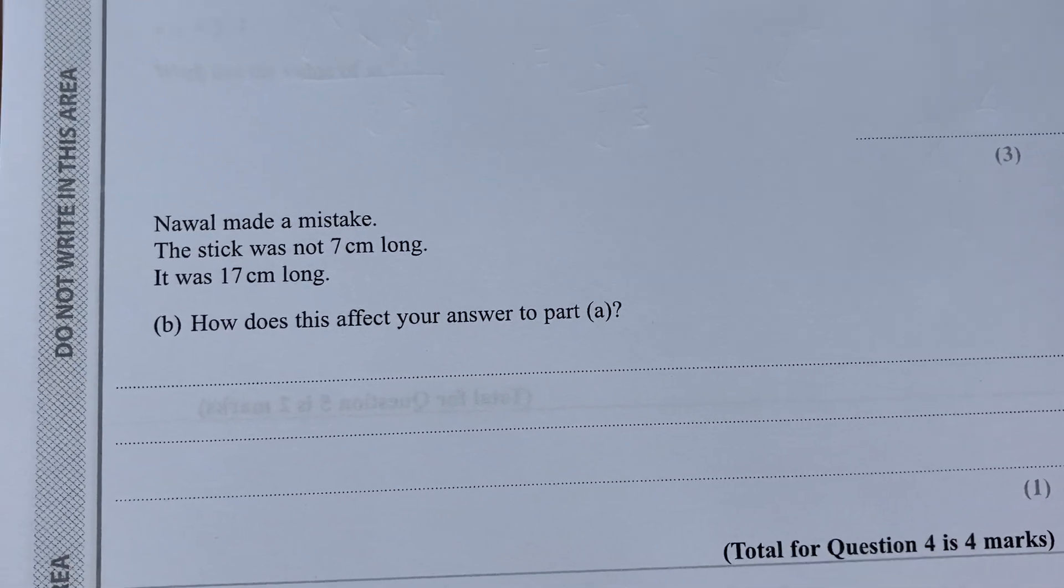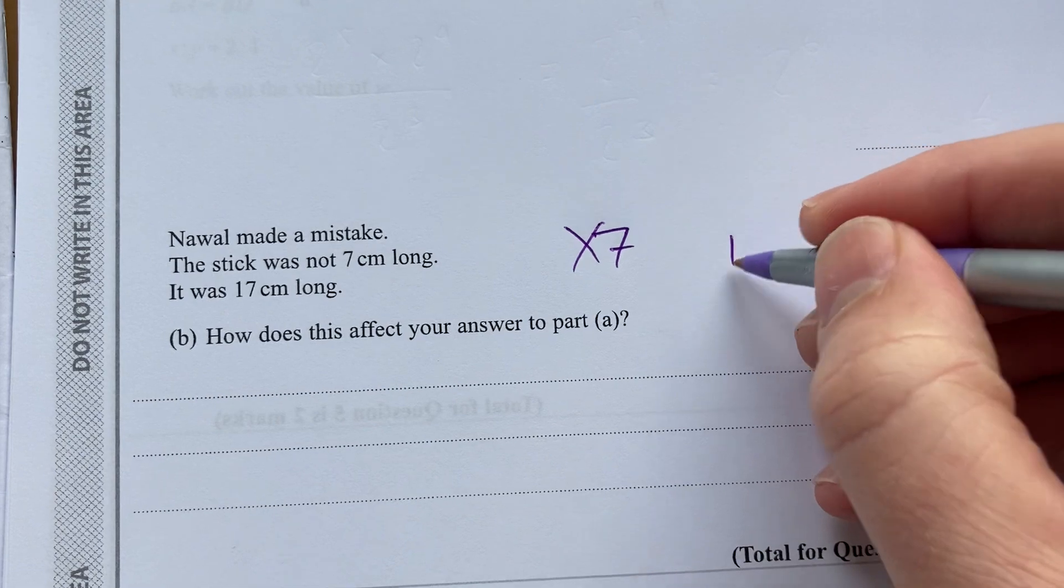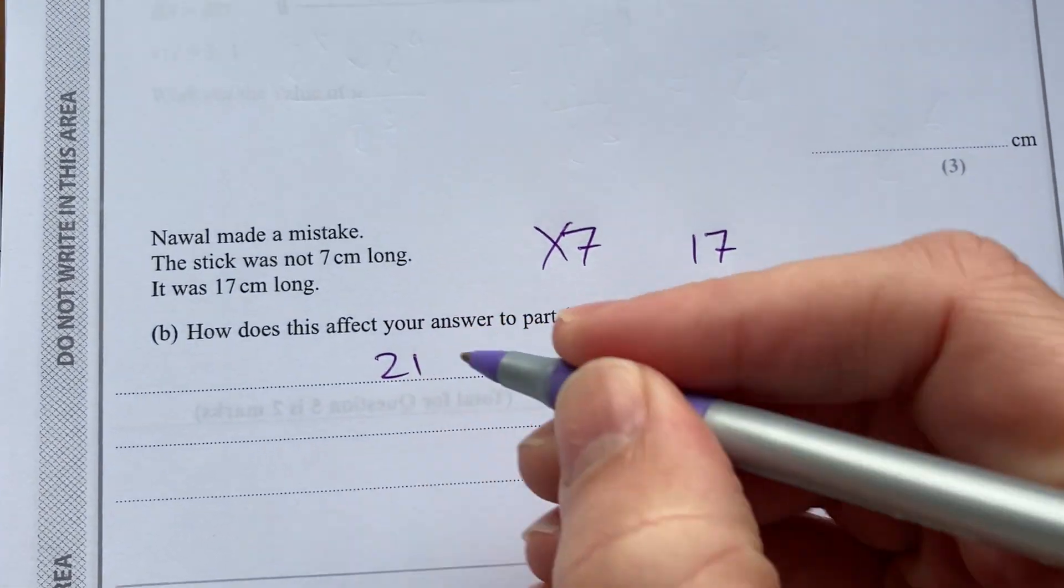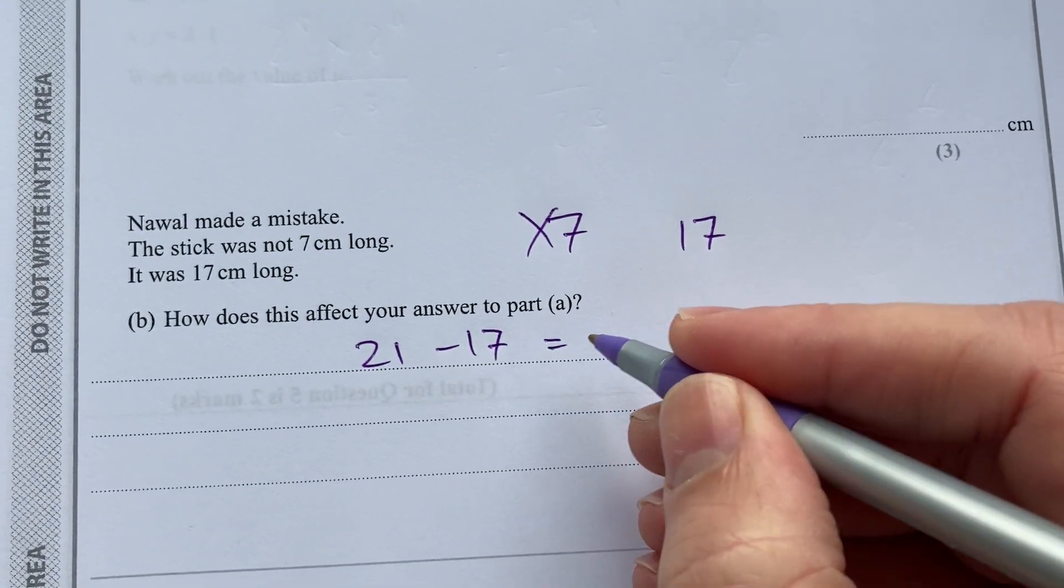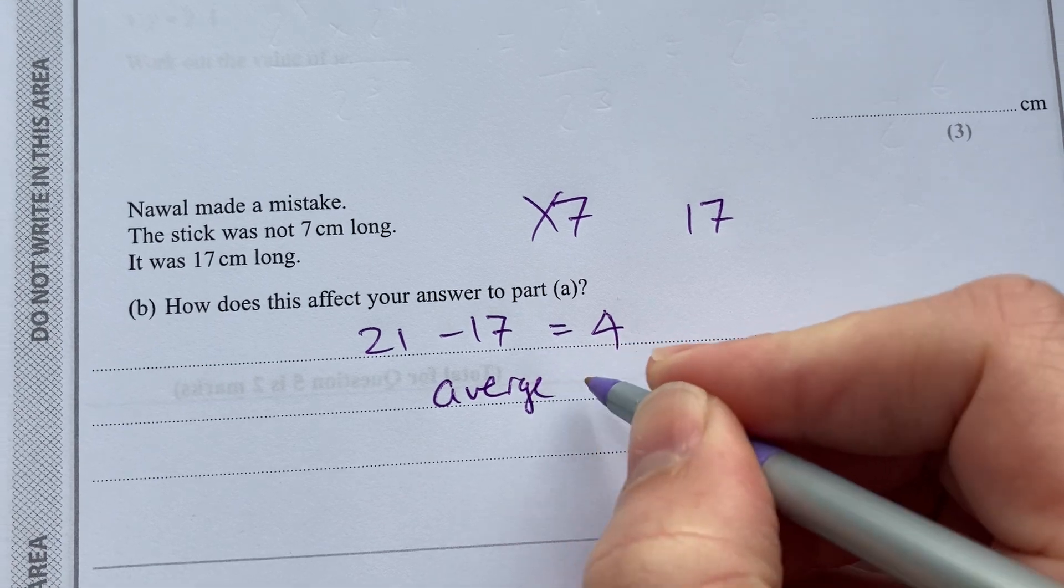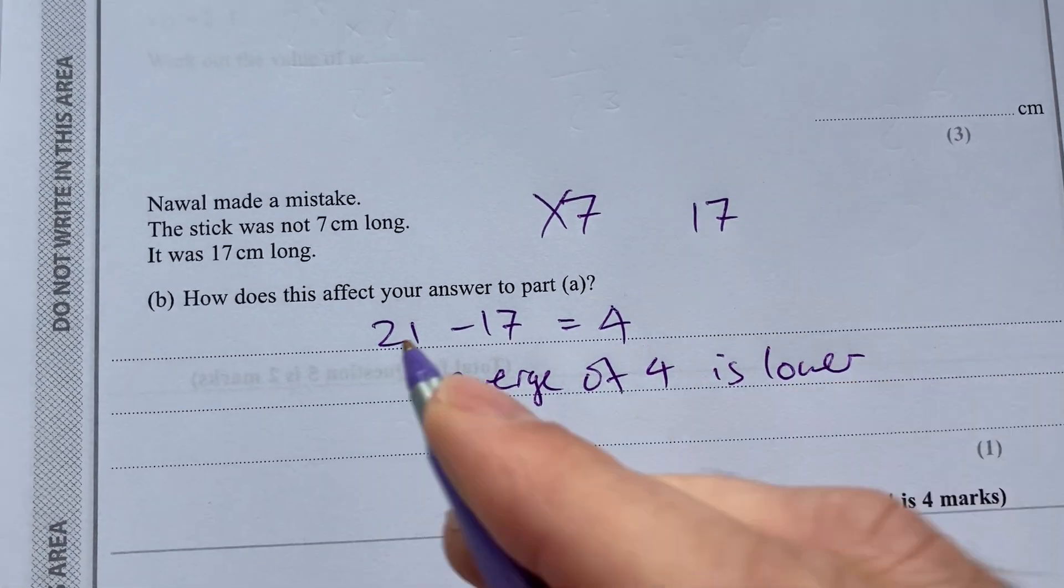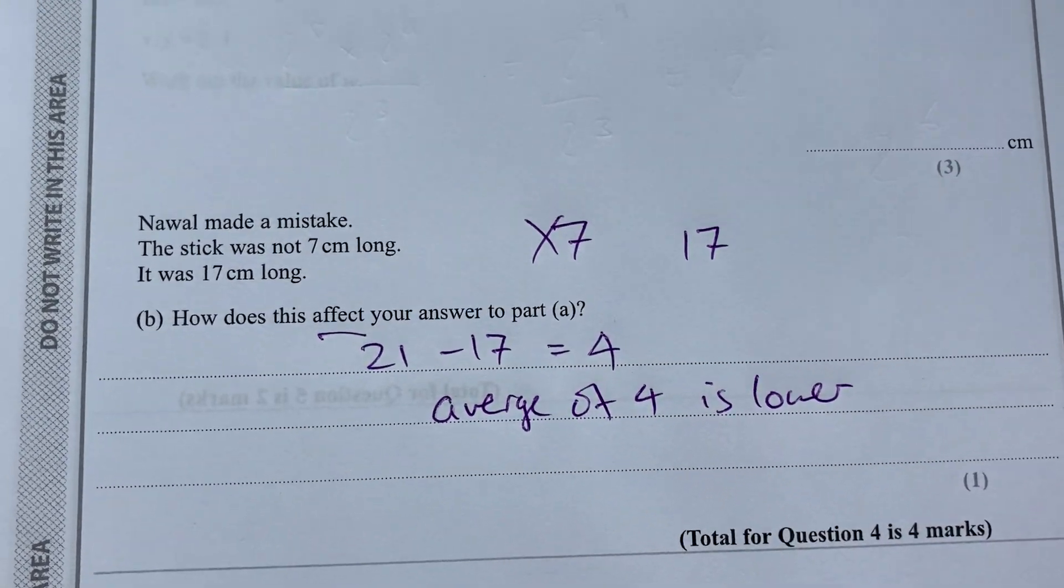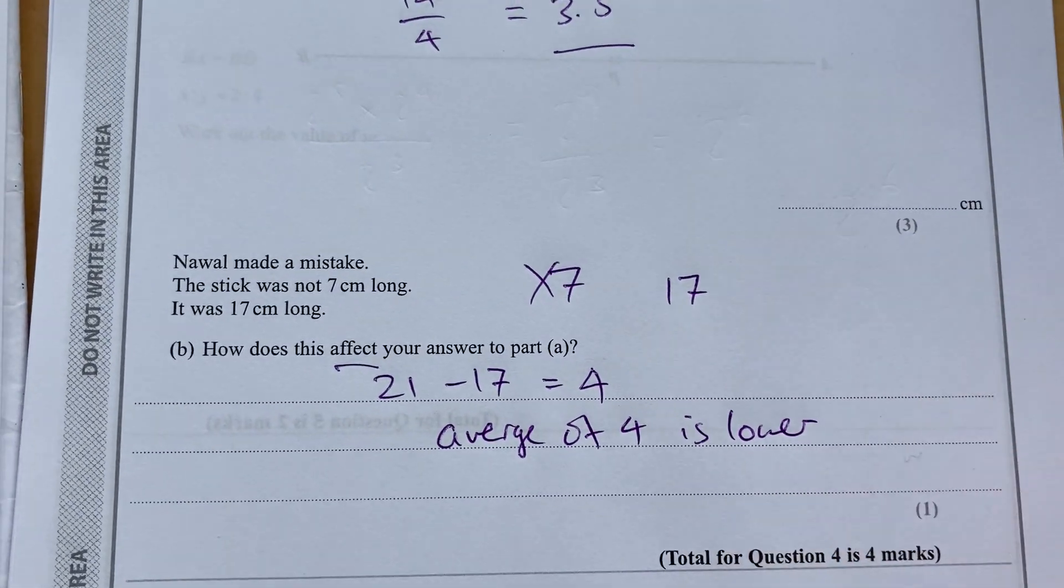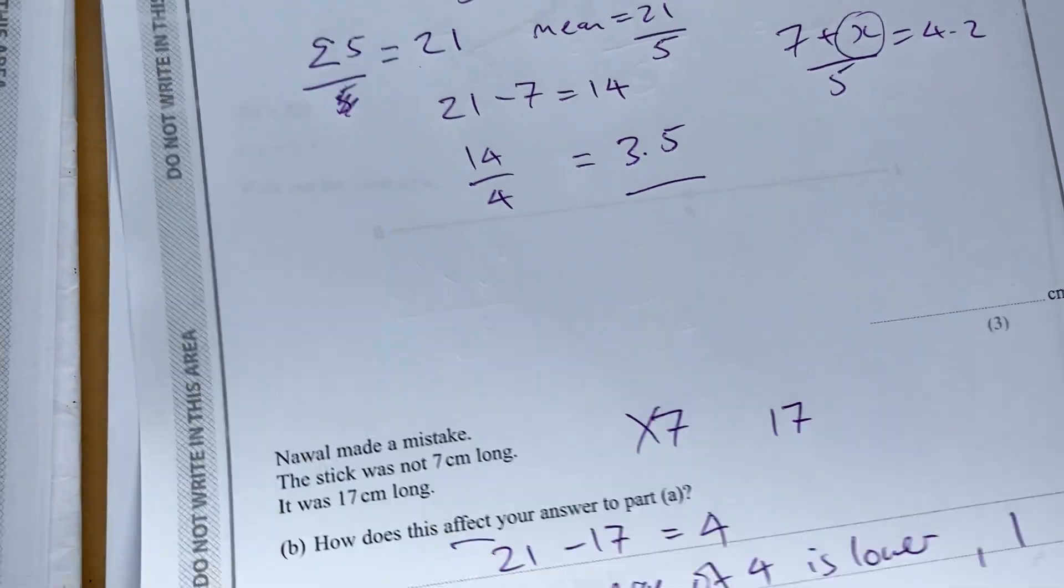Now we find out that Nawal has made a mistake. The stick was not 7, it was in fact 17. So when we take away from 21, we have to take away 17, we're left with only 4. So the average of 4 is lower. So we're not doing 14 divided by 4, we're only doing 4 divided by 4. It's lower, it's 1. That's just worth 1 mark.